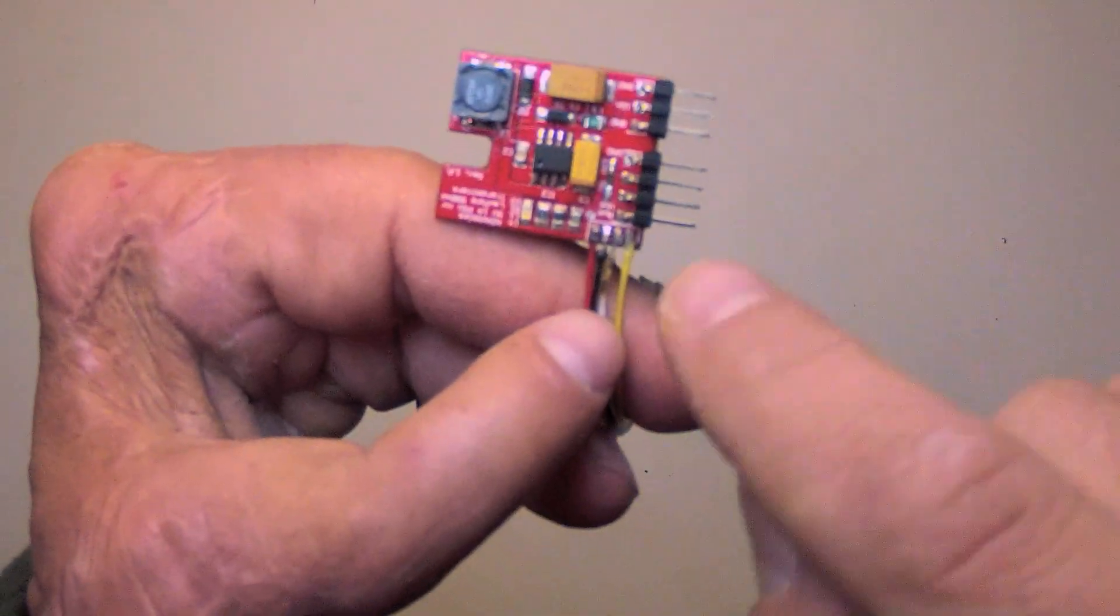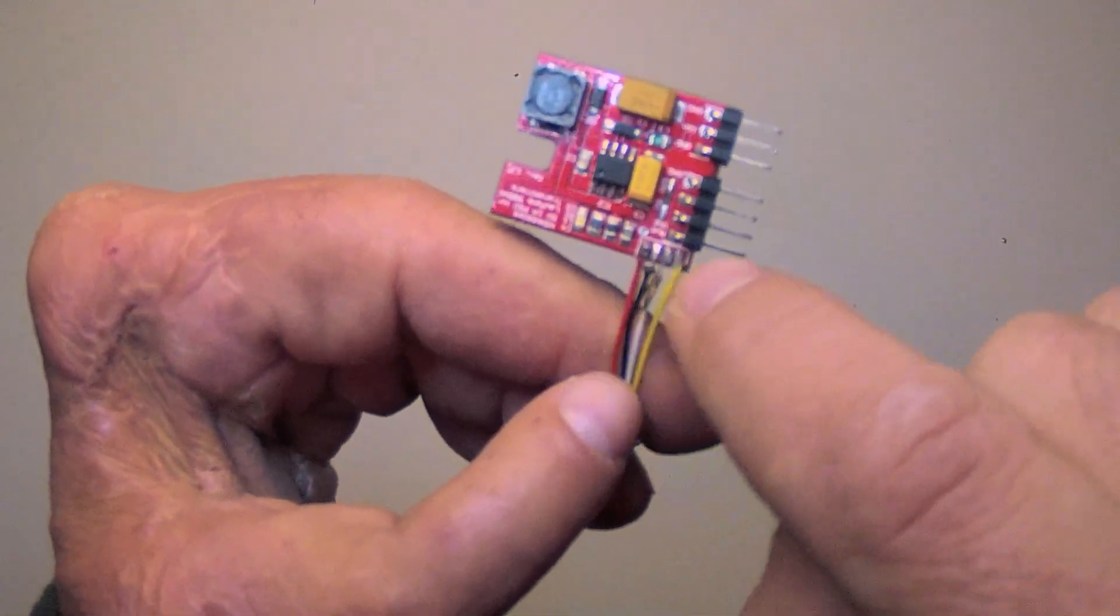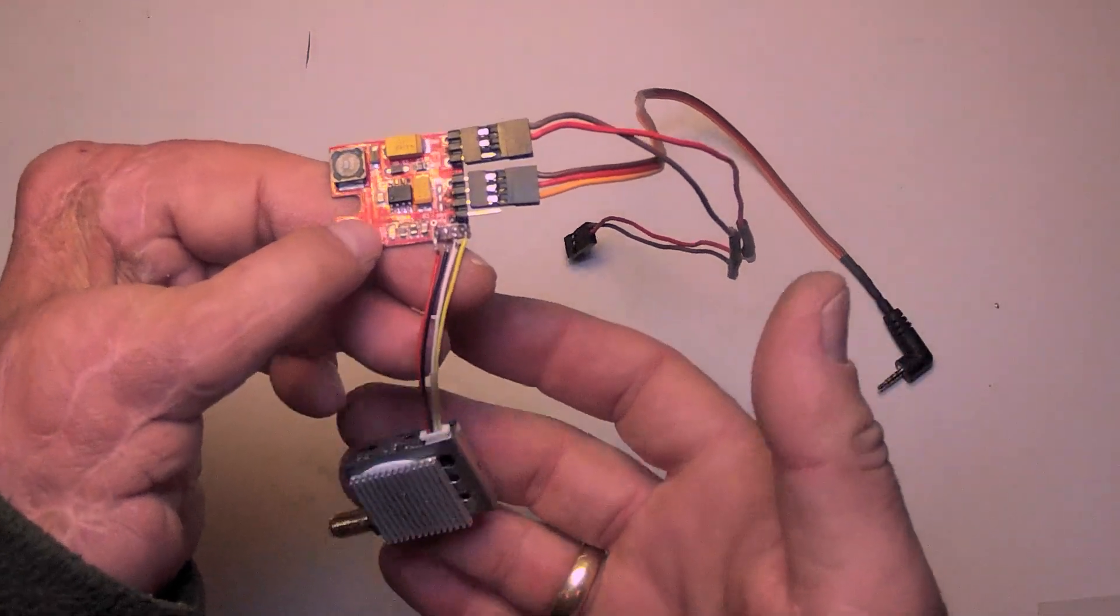I will place a dab of hot glue here over these contacts and squish it down to act as a strain relief for these. Here are the final connections in its raw form.